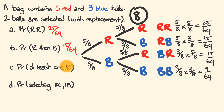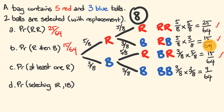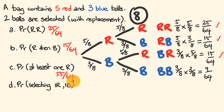For at least one red: red+red, red+blue, and blue+red all contain at least one red; blue+blue has none. Adding those: 25/64 + 15/64 + 15/64 = 55/64. Alternatively, total probability is 1, and 1 − 9/64 = 55/64 — the same answer.